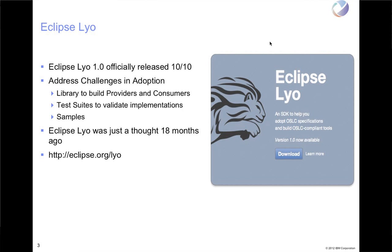Basically the idea of the 1.0 was to address some of the challenges in OSLC adoption — have a library that assists people with building OSLC providers and consumers, have some test suites that you can use to validate your implementations, and provide some sample code that you can use to get started. And I've got the URL there for the Eclipse project.